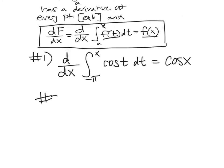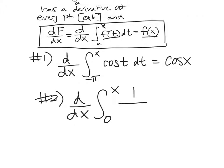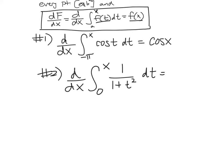Number two: d/dx of the integral from zero to x of 1/(1 + t²) dt. One more easy one before we get to the hard ones. The derivative and integral cancel each other out — it's in terms of x, so you write 1/(1 + x²).